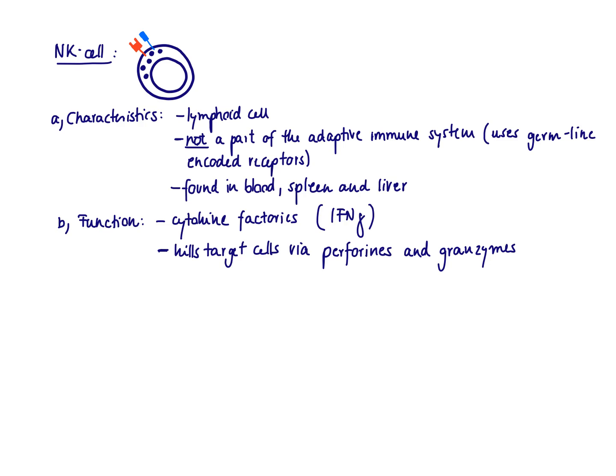It's found in the blood, spleen, and liver. It makes up about 10% of the lymphocytes in the blood. And its major functions are, number one, producing cytokines, mainly interferon gamma.